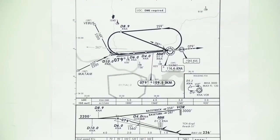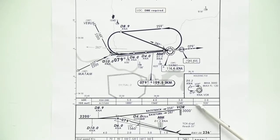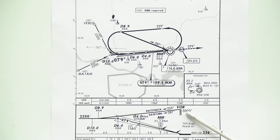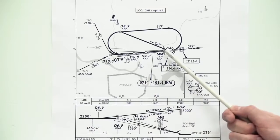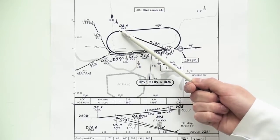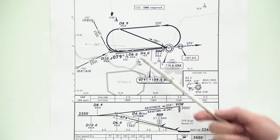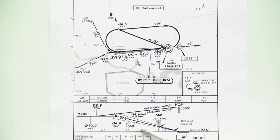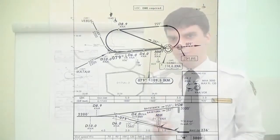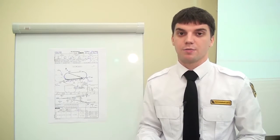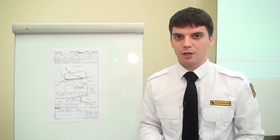As we can see, the ILS approach at Kaunas International can be done in many ways. One way is to fly overhead VOR DME beacon Kilo November Alpha at 3000 feet, then descend to 2200 feet while following radial 287 until a distance of 8.9 miles from Kilo November Alpha. After this, turn left to intercept the glide path and then follow the ILS signals down to minimums.